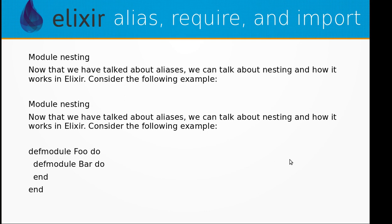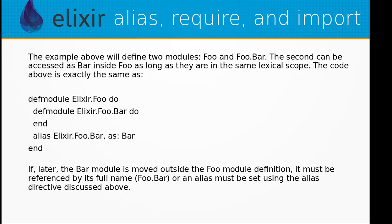Module nesting: now that we have talked about aliases we can talk about nesting and how it works in Elixir. We can define a module within a module — for example a Bar module within the Foo module. This defines two modules: Foo and Foo.Bar. The second can be accessed as Bar inside Foo as long as they are in the same lexical scope.